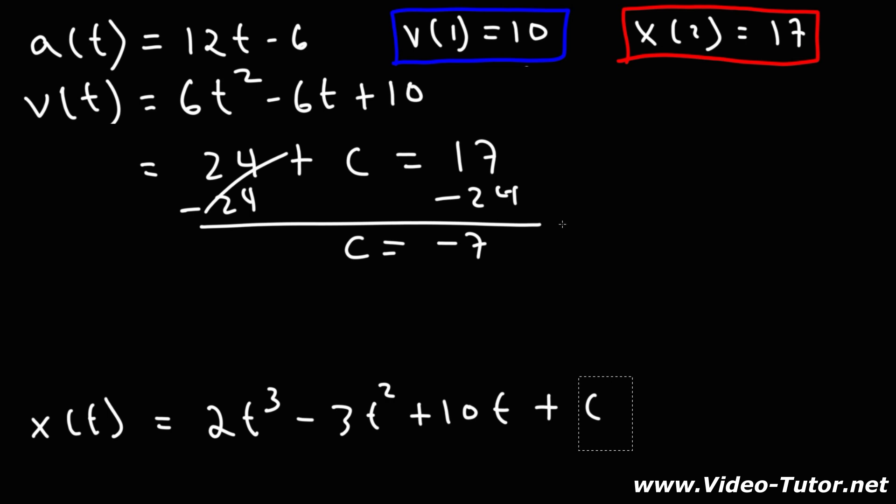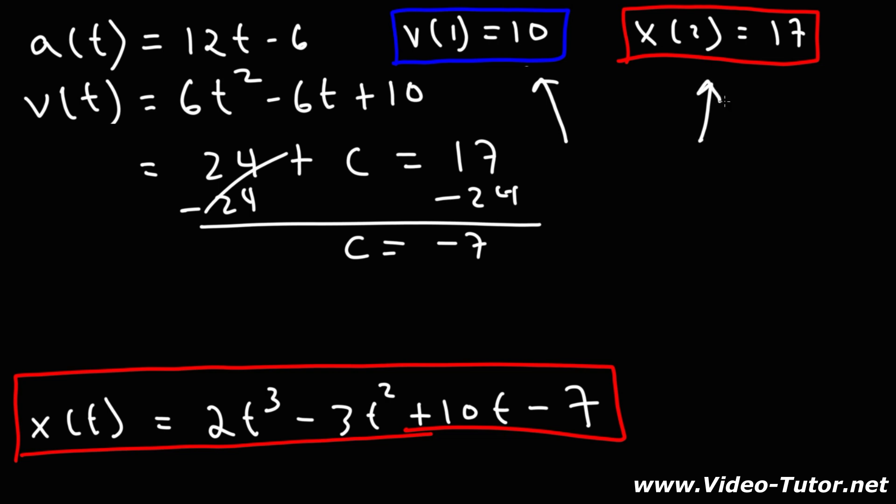So we can replace c with negative 7. So this is the position function. So that's how we can determine the velocity function and the position function from acceleration by means of integration. So when you integrate the acceleration function, it will give you the velocity function. And you have to use this point to solve for c. Once you do that, you can integrate the velocity function to get the position function. Once again, you've got to solve for c using the second point.